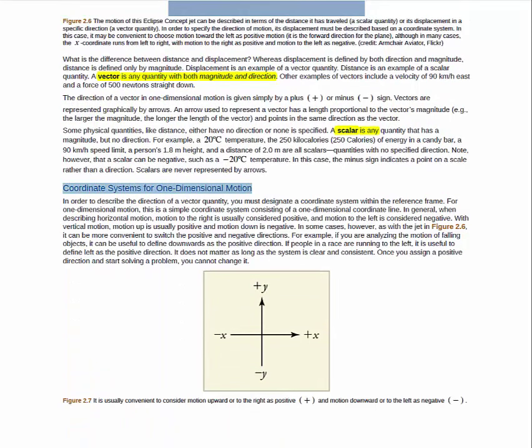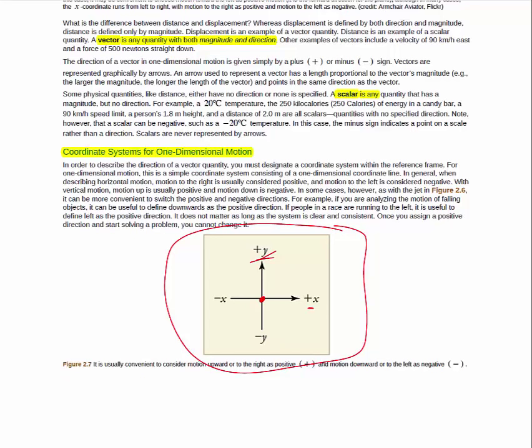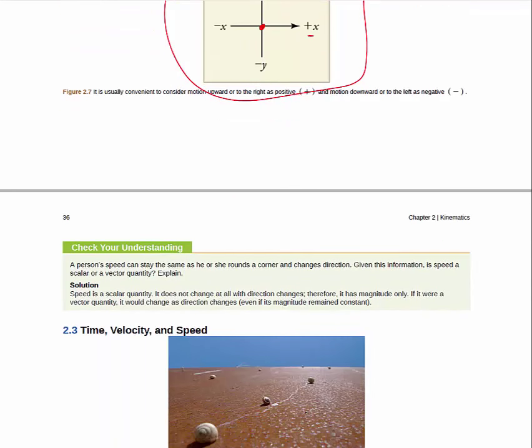For example, here you have a vector and the precise definition of a vector and scalars. You want to make sure you understand the difference between vectors and scalars. Then, we move on to discussing coordinate systems. You've probably seen coordinate systems that look something similar to this in a math class where you've got x and y. One important thing to note here is that we get to choose where the origin of our coordinate system is going to be. I would also like to draw your attention to this statement here. Once you assign a positive direction and start solving a problem, you can't change it.